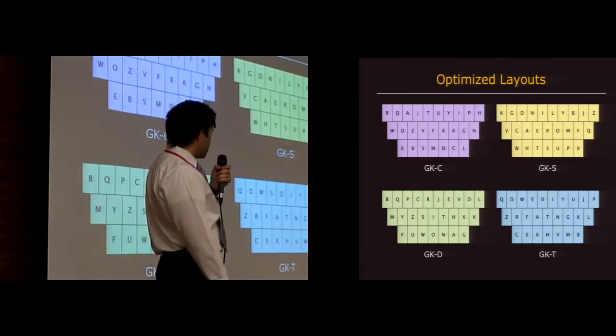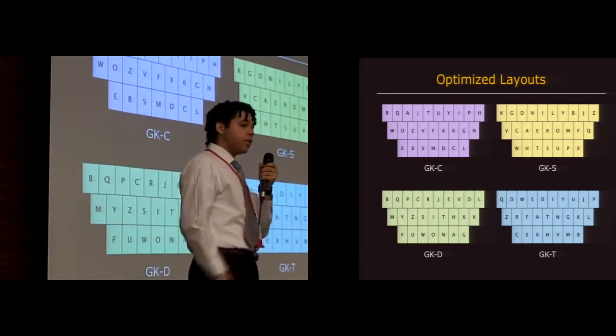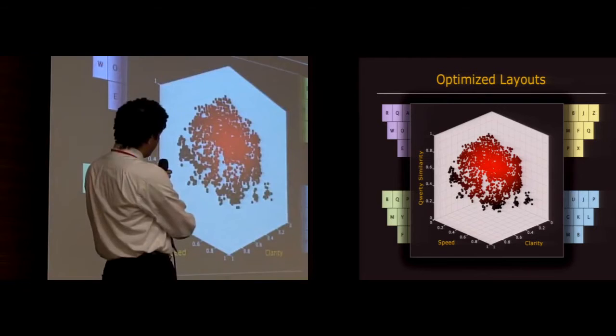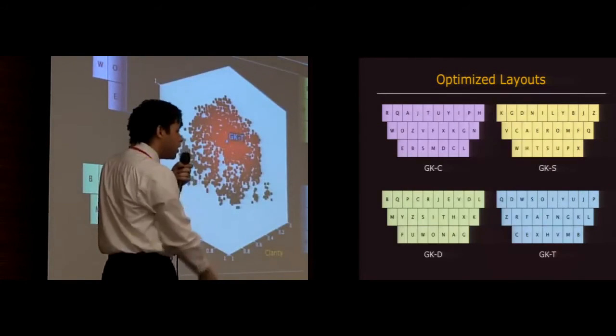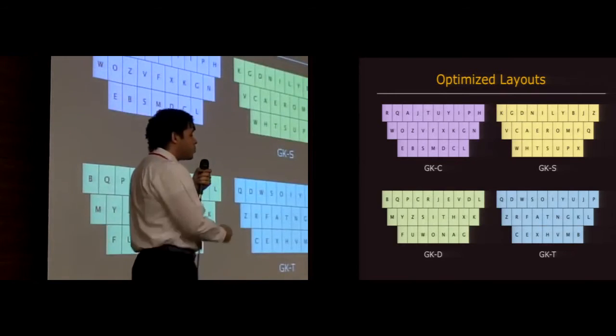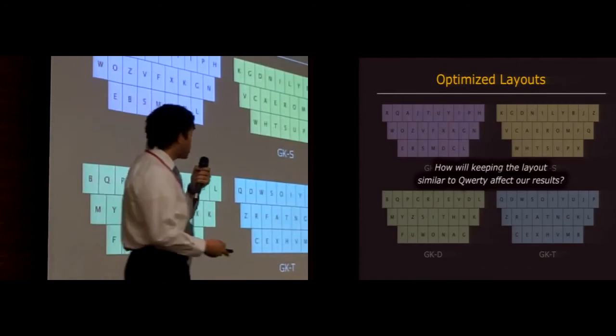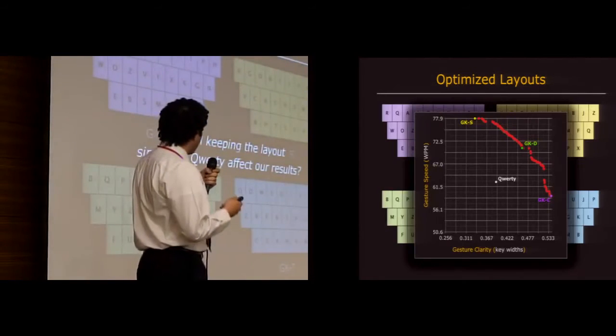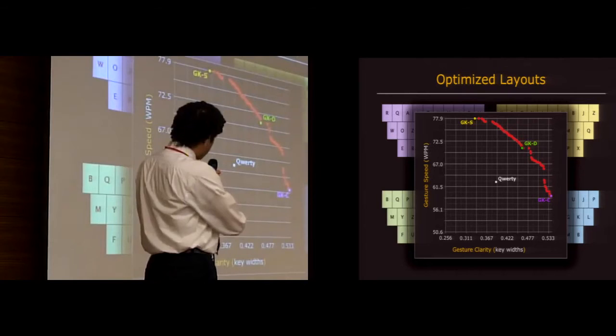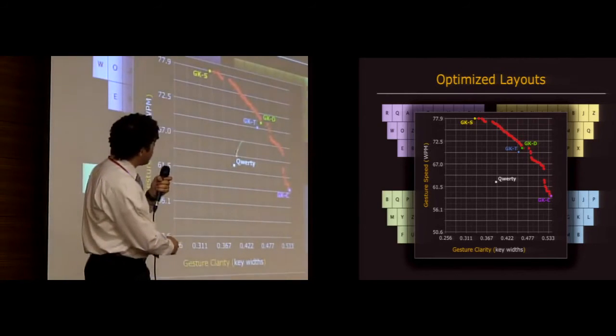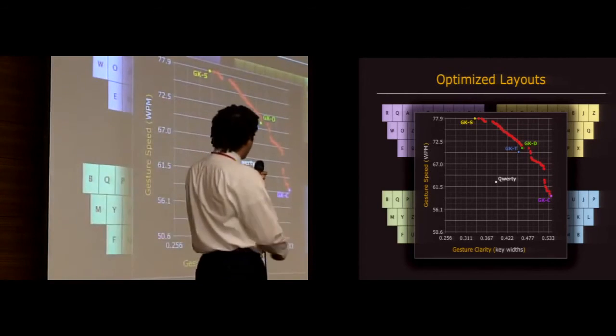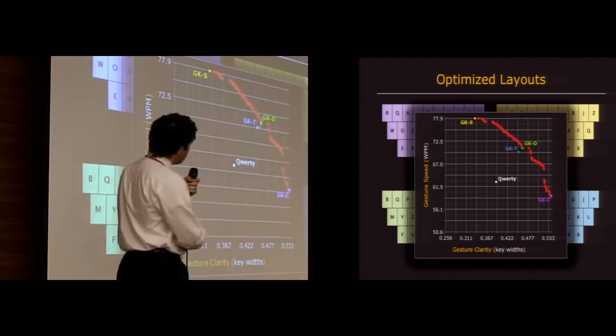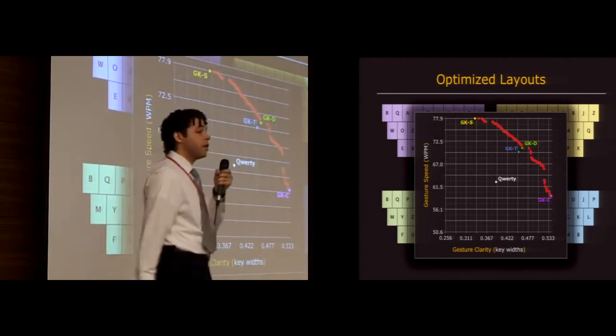And last is GKT, the triple optimized layout, which also incorporates QWERTY similarity. So that one we find by taking the layout that's closest to the 45 degree line in 3D space. So that's this layout here. This one actually answers our third key question, which was how will keeping the layout similar to QWERTY affect our results? The answer to that, if we place the layout on this 2D projection from before, you'll see that it's right here next to GKD. So that means that incorporating learnability, fostering it by including QWERTY similarity, actually does not hurt speed or clarity very much at all.